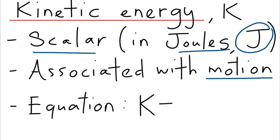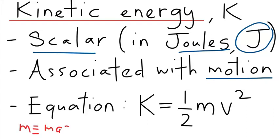The equation defining kinetic energy is written as K = ½mv², where K is the symbol for kinetic energy, m is mass in kilograms, and v is the speed in meters per second. When the object is moving, v is non-zero so K is non-zero; when the object is not moving, v is zero and K is zero — that is what we mean when we say kinetic energy is associated with motion.